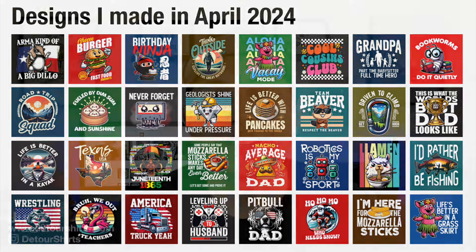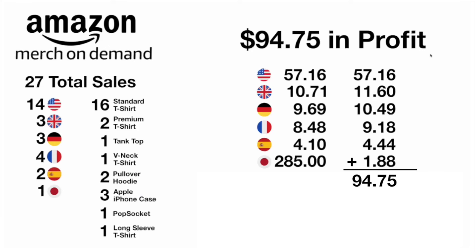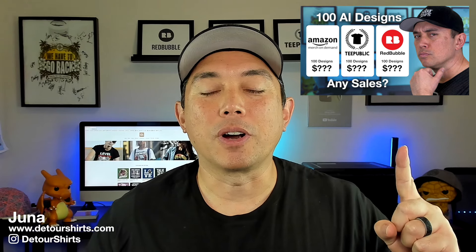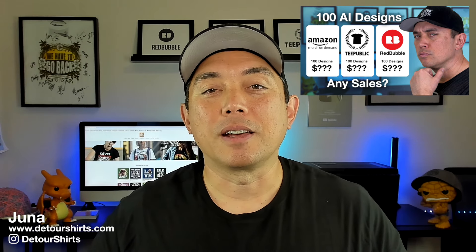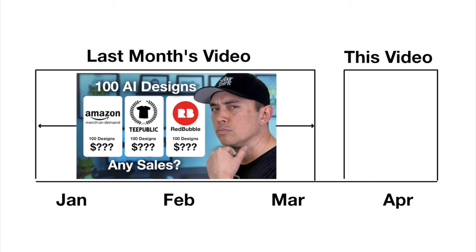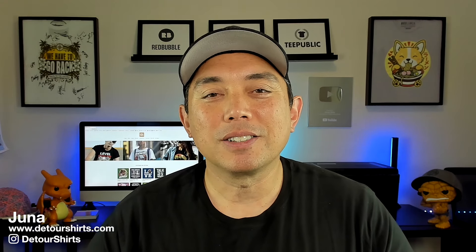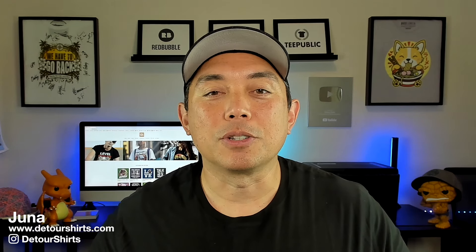I've made all these designs and I'm being very transparent about showing you my designs as well as the income I get from them. I made a previous video at three months in showing the profit I made on Redbubble, TPublic, and Amazon. This is an update to that — month four — and I'm going to show you what I made just in the last month, compare it to the last three months, and show you the trajectory: whether Redbubble is doing any good, whether TPublic is doing any good.